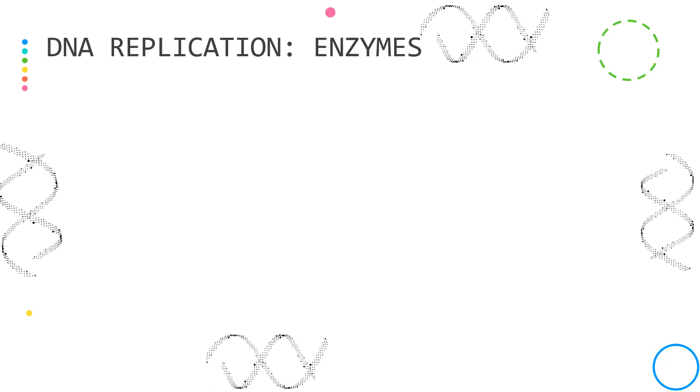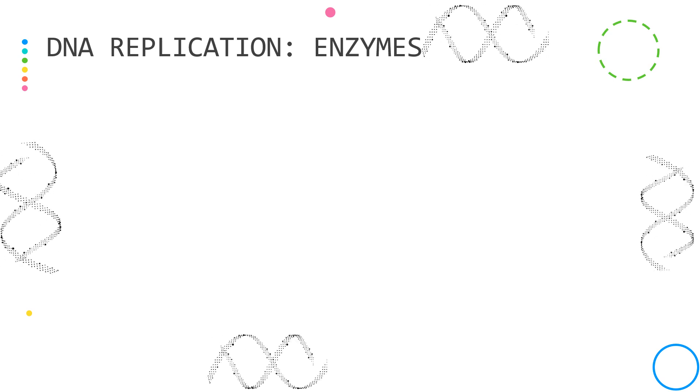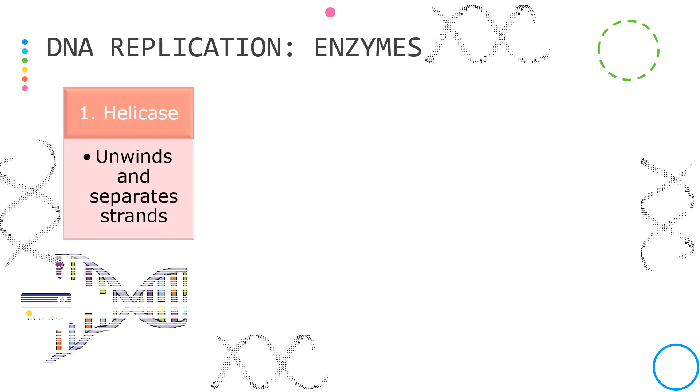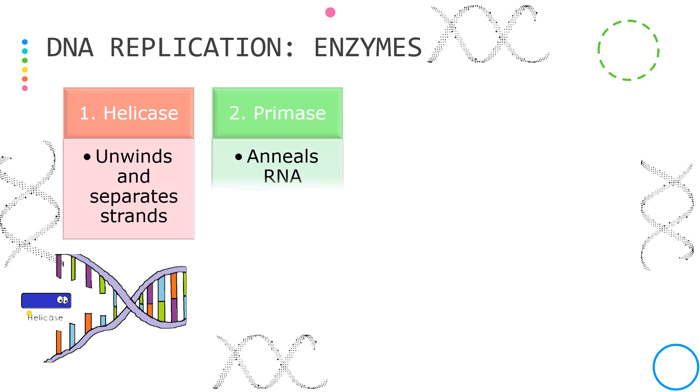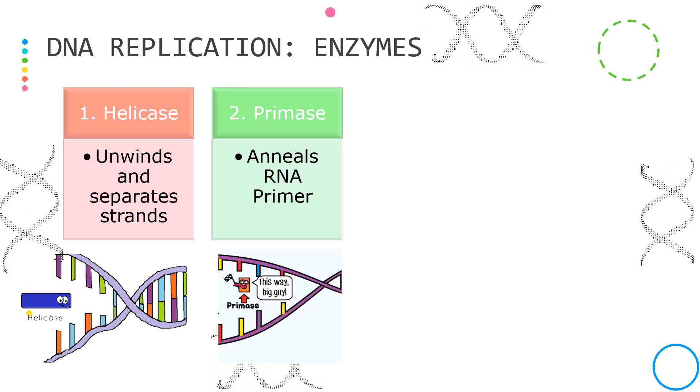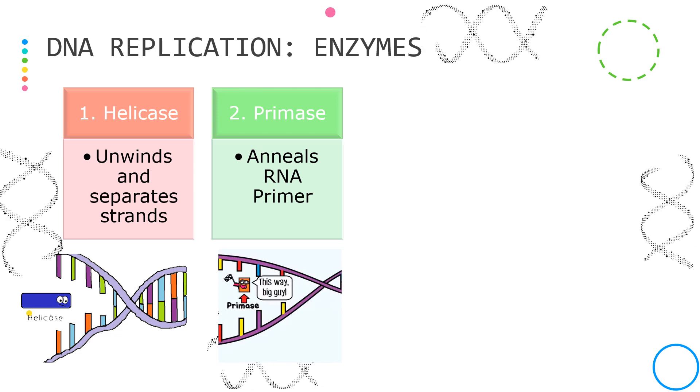There are four enzymes that are important for the DNA replication process. First one is the helicase, which unwinds and separates the DNA strands. The second one is primase, which is responsible for annealing the RNA primer.